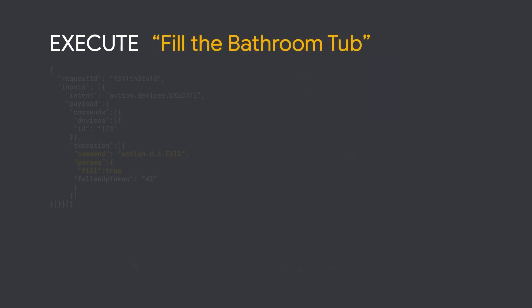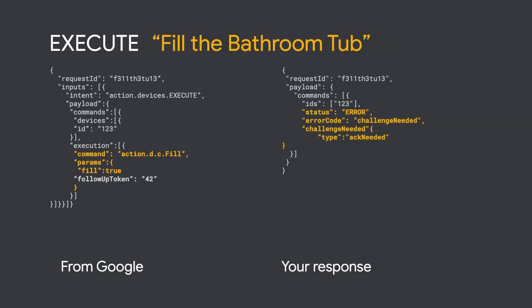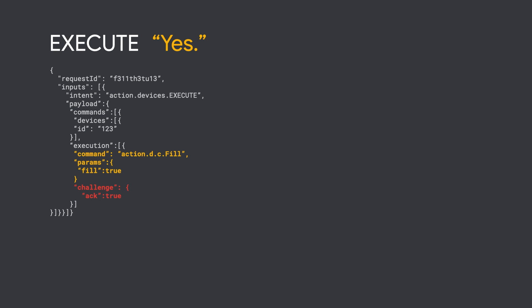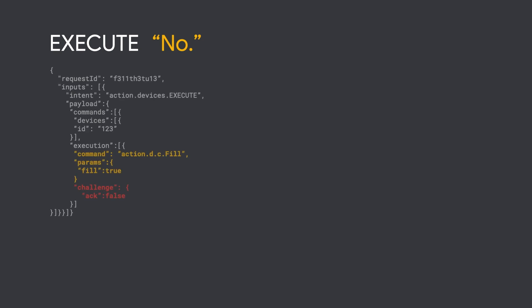Secondary user verification can be used for trait commands that developers may not want running when the user is not present, like filling up a bathtub. A simple acknowledgement can be used to make sure the tub is needed to be filled. The user can reply with yes or no. If no, return error code user canceled, and Google Assistant will respond with OK.